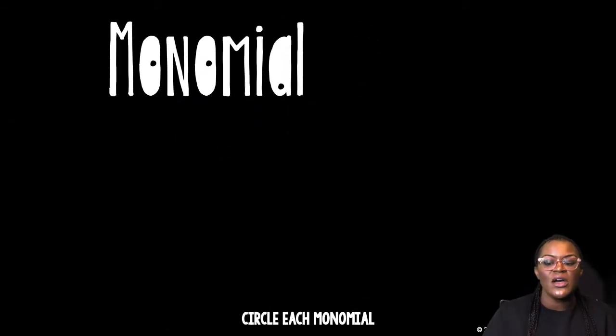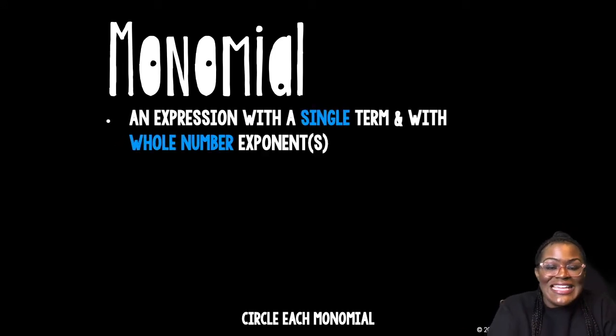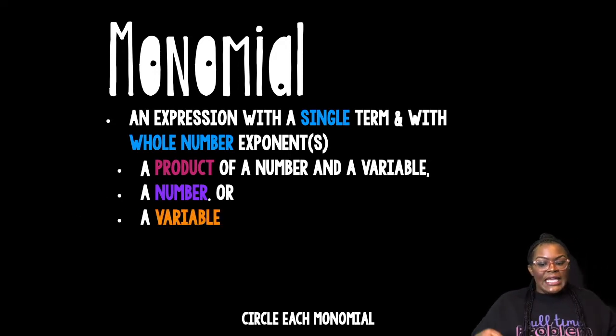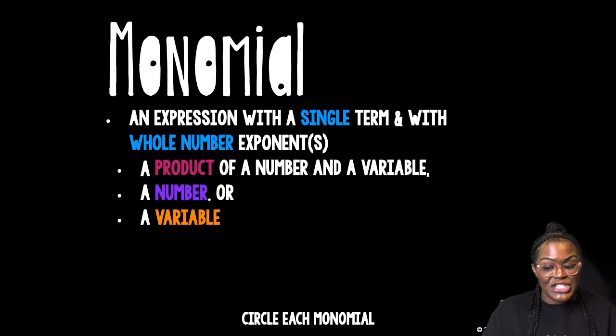First of all, you need to know what a monomial is. A monomial is an expression with a single term and with whole number exponent or exponents. It is a product of a number and a variable, a number, or a variable. What it is always is an expression with a single term. Because the prefix mono means one.